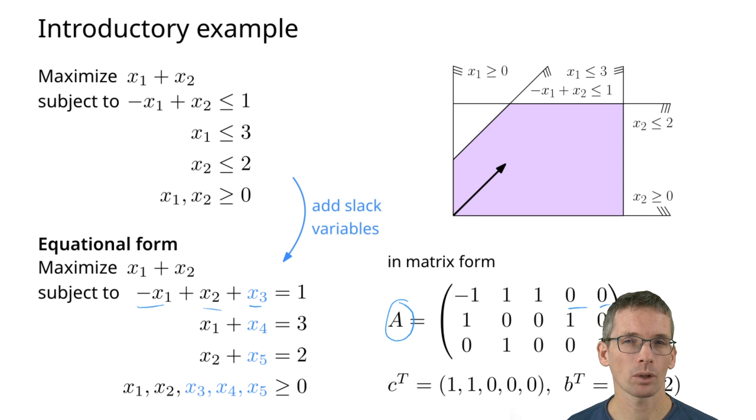We are now going to rewrite this in a simplex tableau, which is a key concept for the simplex algorithm. For a simplex tableau we first have to decide on a basis. Luckily in this case it's easy to find a basis. If you just look at this part of A, here we have the identity matrix. So this is the third, fourth and fifth column. If we pick that as a basis, then certainly those columns are linearly independent.